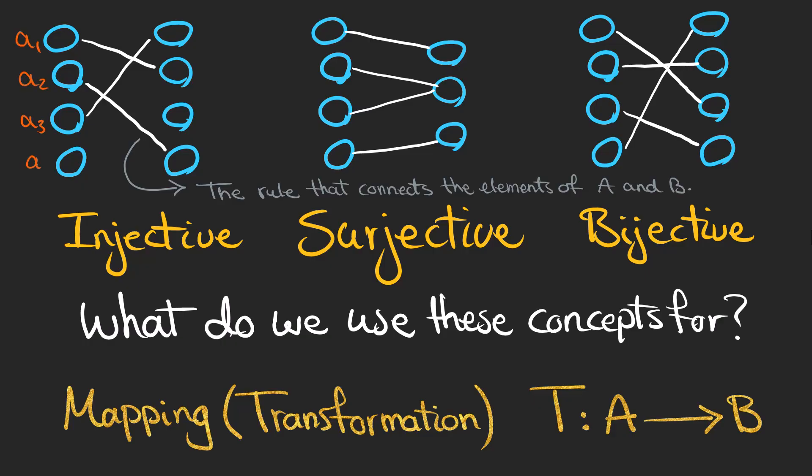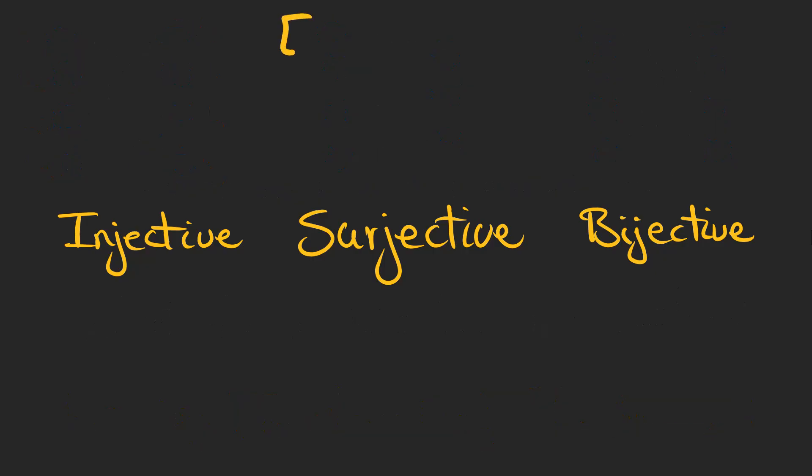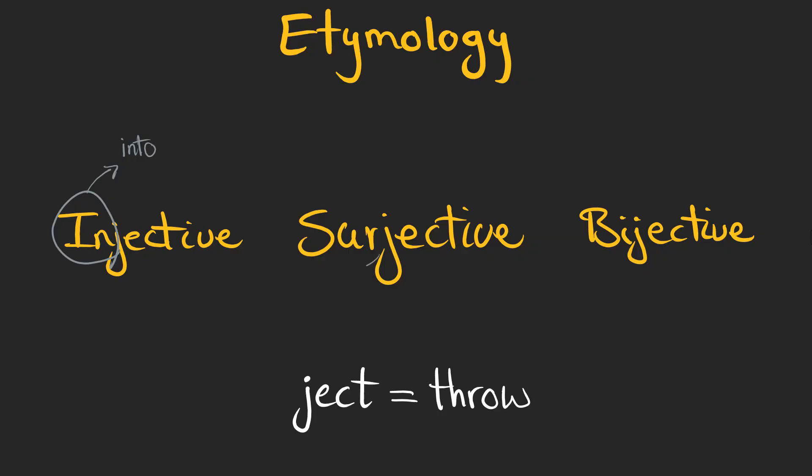We can show the elements of the set on the left using A1, A2, and so on, and also the elements of the set B using B1, B2, and so on. You might want to know about the etymology of these words, and I think it really helps. The root inject comes from a Latin word and means to throw, like the people on the left who were throwing themselves to the people on the right. This prefix means into, this one means onto or over, and this one means a two-way connection.